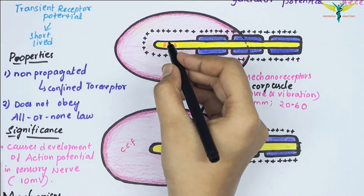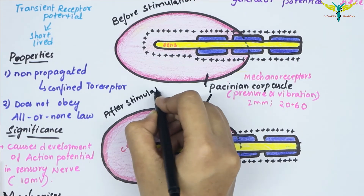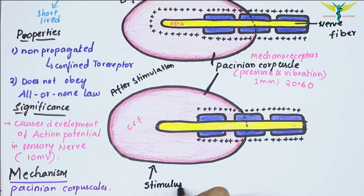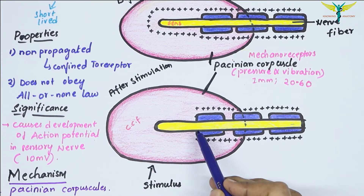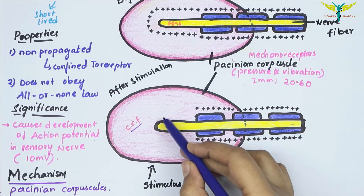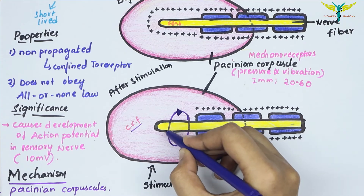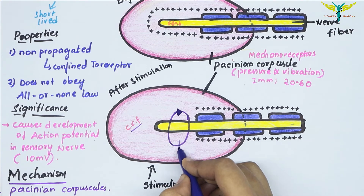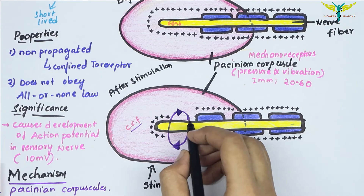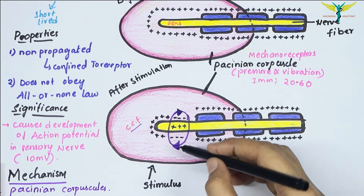This diagram shows the Pacinian corpuscle before stimulation, and this diagram shows it after stimulation. When the stimulus is applied, it results in a change in shape of the corpuscle, leading to deformation of the central core fiber, then opening of the mechanically gated sodium channels. The positively charged sodium ions enter the interior of the core, producing a mild depolarization called the receptor potential. The outside becomes negative due to the entrance of sodium ions.